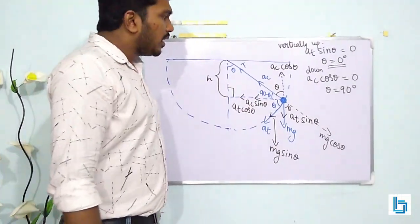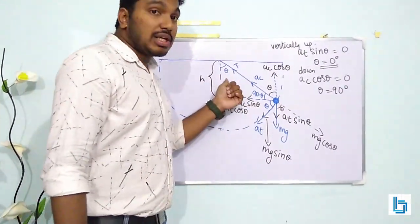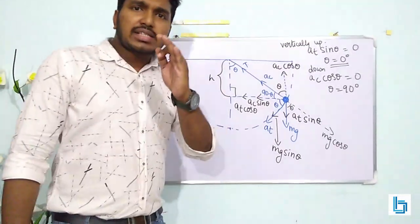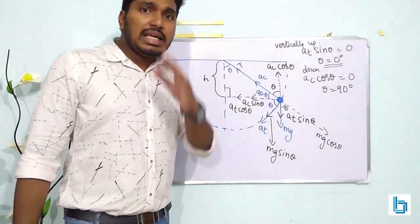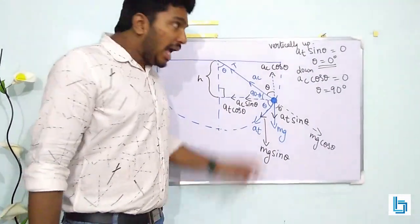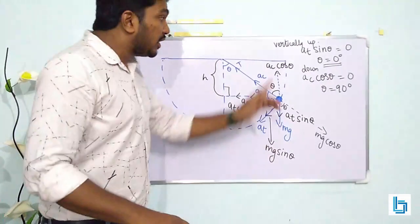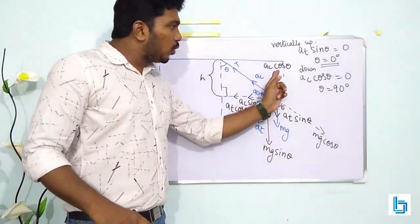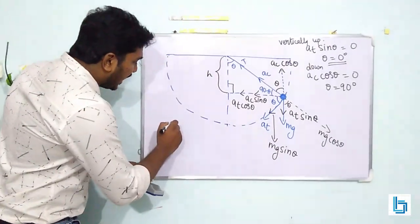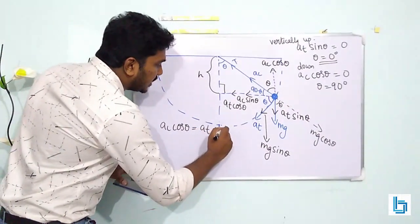For the third part: at what angle theta is the acceleration horizontal? If the acceleration is horizontal, the vertical components must cancel out. That means AC cos theta should equal AT sin theta.